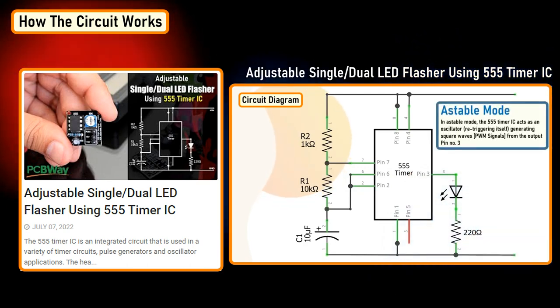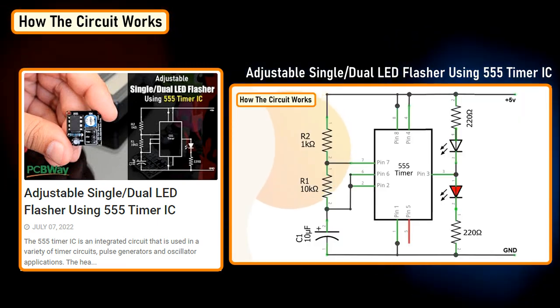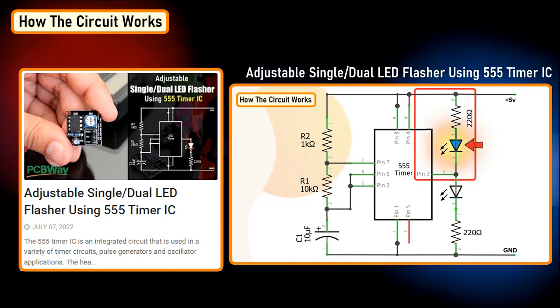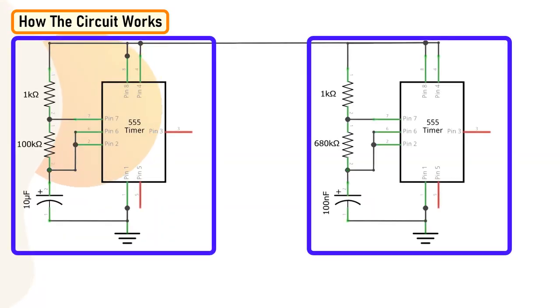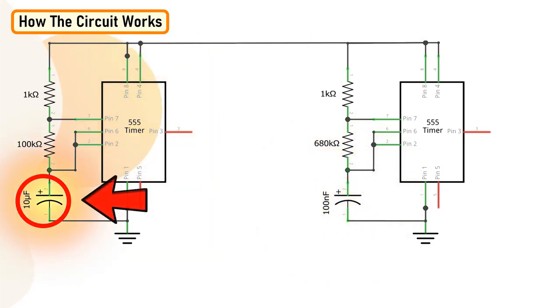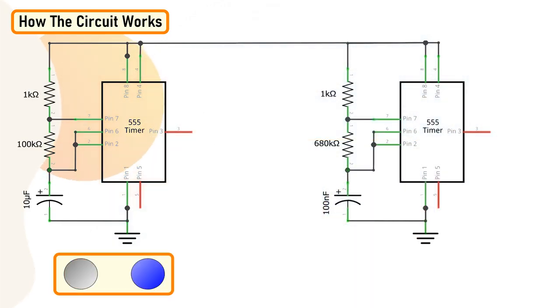In astable mode, the 555 timer IC acts as an oscillator re-triggering itself generating square waves from output pin number three. Later, I also showed you guys how to connect two LEDs in opposite polarity at the output pin number three so that they toggle on and off at regular interval of time. In this tutorial, I'm using two copies of the previously shown astable circuit configured at different frequencies. The first 555 timer IC uses a higher value capacitor and hence it takes more time to toggle the output. The second 555 timer IC uses a lower value capacitor and hence it toggles the output very fast.